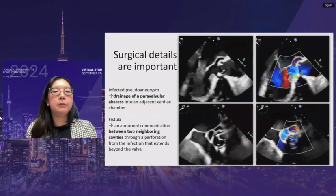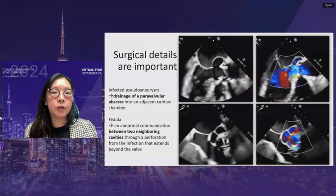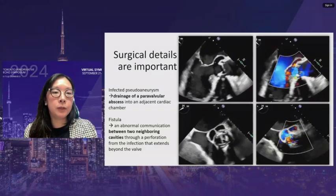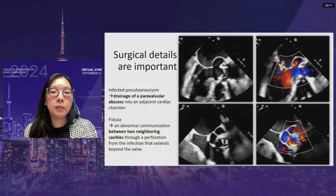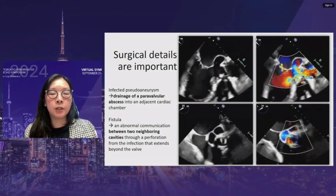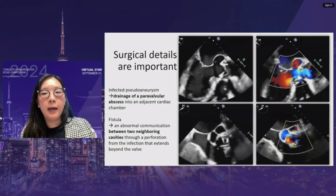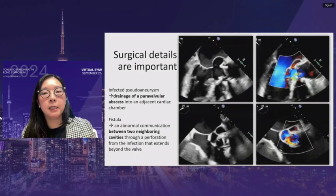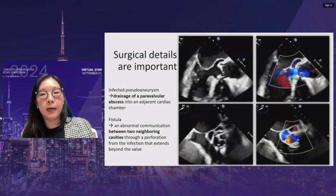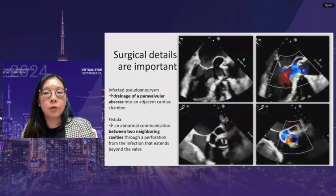Surgical details are critical. A patient with IE who had root reconstruction with valve replacement requires understanding of the post-surgical anatomy. Posteriorly, a large space is visible — a pseudoaneurysm, which is drainage of a paravalvular abscess into the adjacent cardiac chamber. At approximately 6 o'clock, a jet is seen representing a fistula — an abnormal communication between two neighboring cavities. In this case, it is an aorta-to-LV communication through a paravalvular leak.